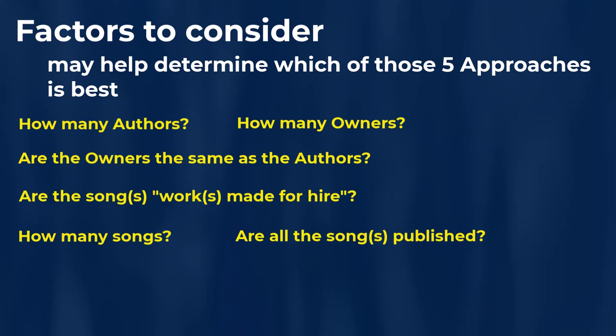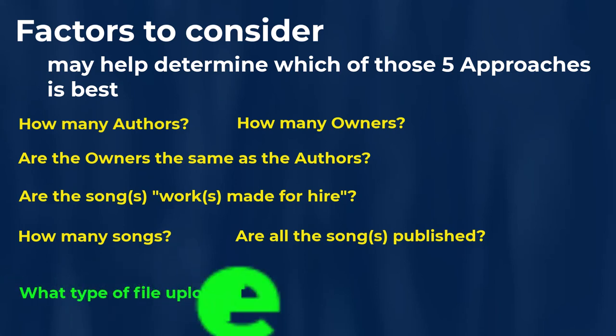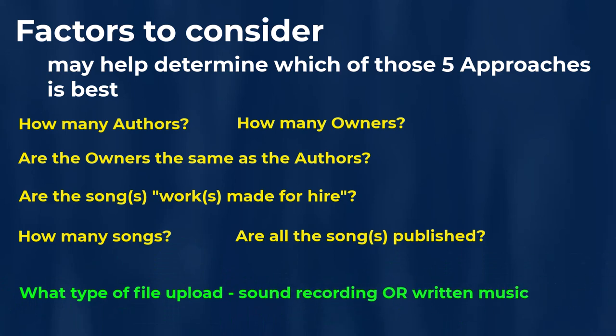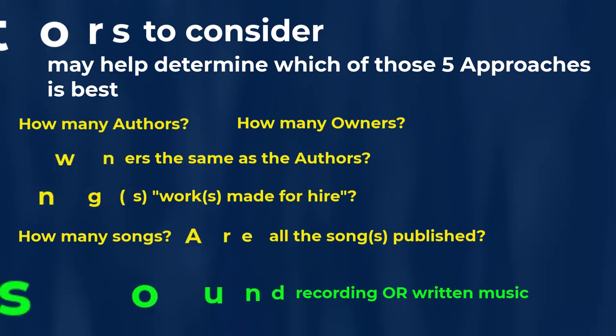Another factor that's important to consider is what type of file you will be uploading to document the music — is it a sound recording file or a written music file? Understanding exactly what type of file you're going to be uploading will help you determine, once you've picked the appropriate copyright registration application, the appropriate type of work. You'll either be choosing 'sound recording' if uploading an audio file, or 'work of the performing arts' if uploading a written music file.